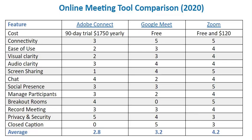I'm going to compare three online meeting tools: Adobe Connect, Google Meet, and Zoom. Adobe Connect is the most costly at about $17.50 per year. Google Meet is free and Zoom is also free; however, if you want to have meetings larger than three to four people and you want to meet for more than 40 minutes, you're going to have to spend somewhere between $120 to $200 a year.